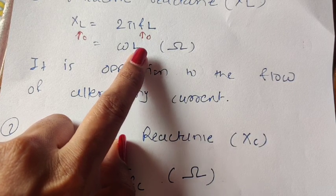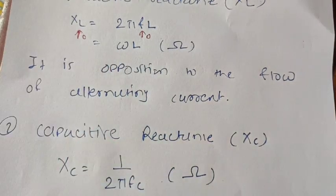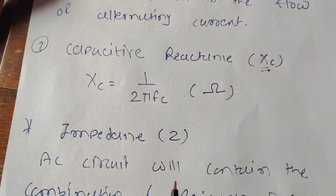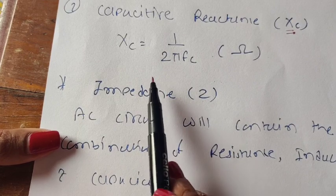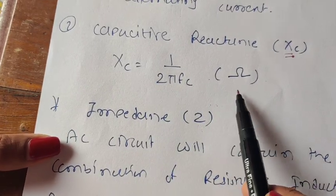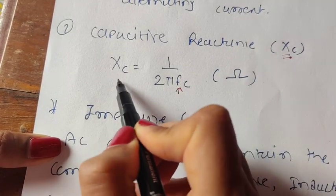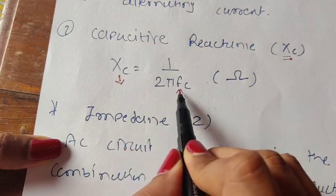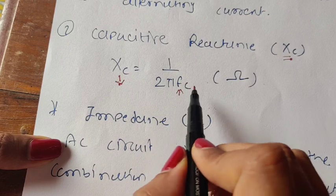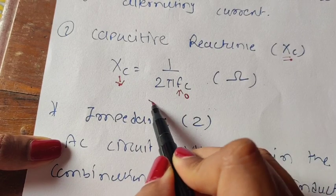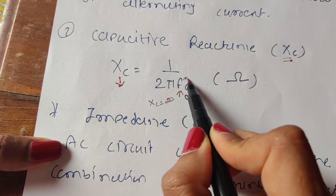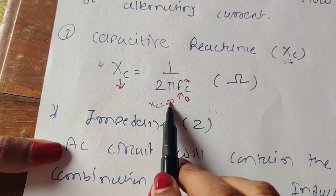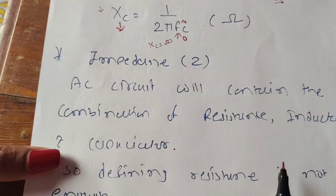The second parameter is capacitive reactance, represented as X_C. The mathematical formula for X_C is 1/(2πFC), and it is measured in ohms. As frequency increases, X_C decreases — frequency and capacitive reactance are inversely proportional. When frequency is zero, X_C is infinite; when frequency is present, X_C is very low. Therefore, a capacitor provides greater opposition to DC voltage or DC current.